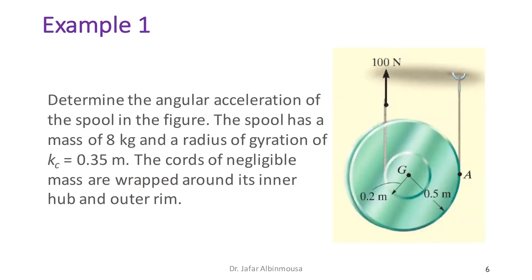In the first example, we are asked to determine the angular acceleration of a spool with mass 8 kg and radius of gyration about G of k_G = 0.35 m.